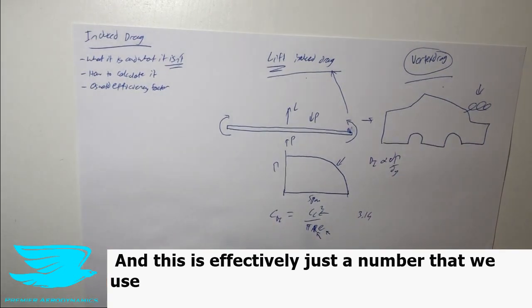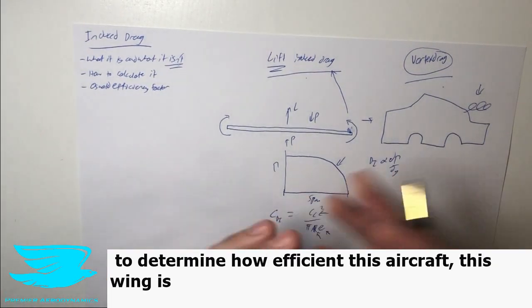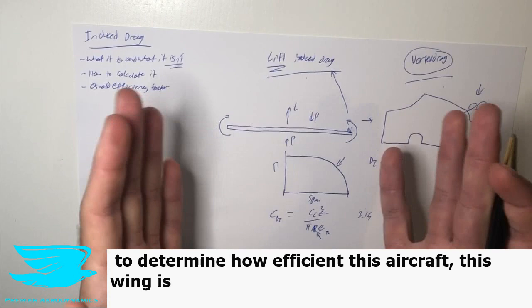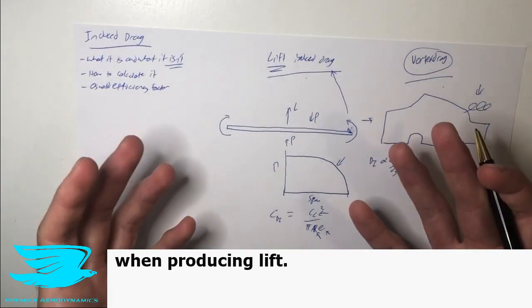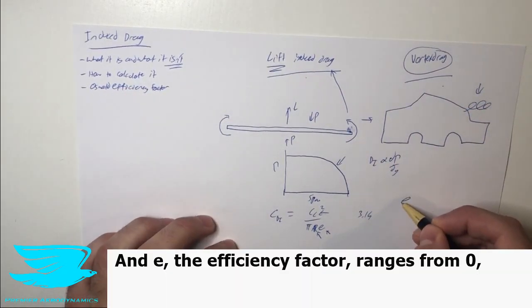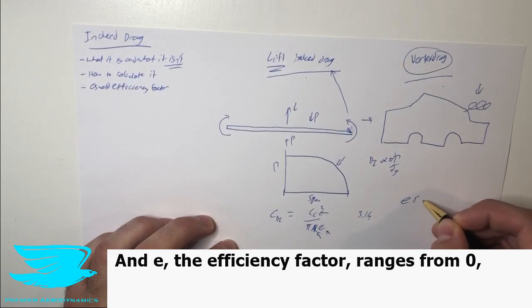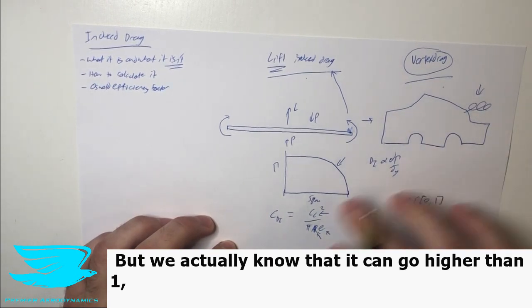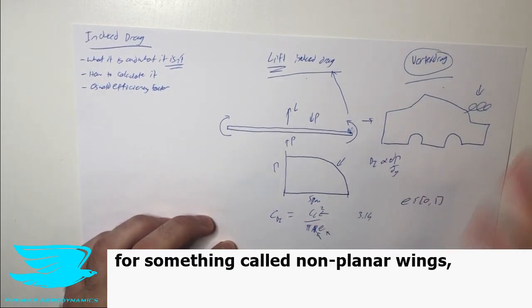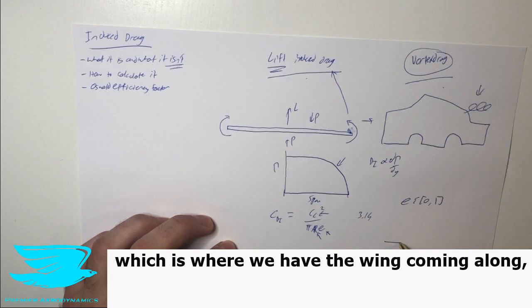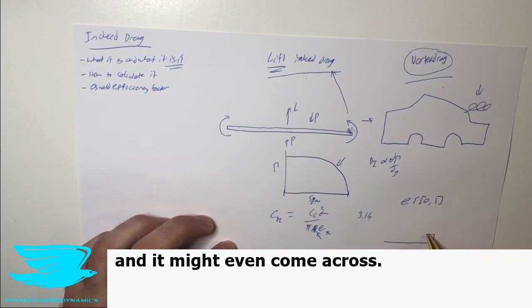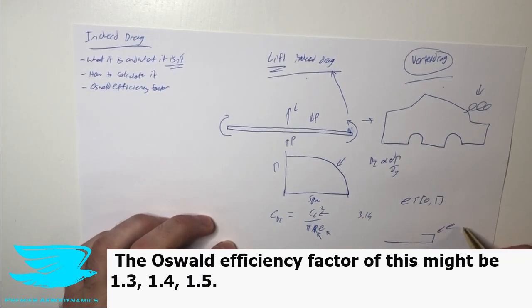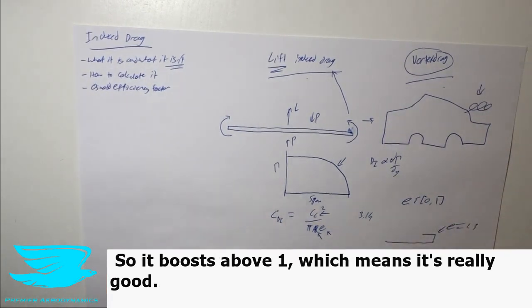And this is effectively just a number that we use to determine how efficient this aircraft, this wing is when producing lift. And E, Oswald efficiency factor, ranges from zero. And historically, we've said it went to one. But we actually know that it can go higher than one for something called non-planar wings, which is where we have the wing coming along, and then the wing tip actually juts up, and it might even come across. The Oswald efficiency factor of this might be 1.3, 1.4, 1.5. So we boost above one, which means it's really good.